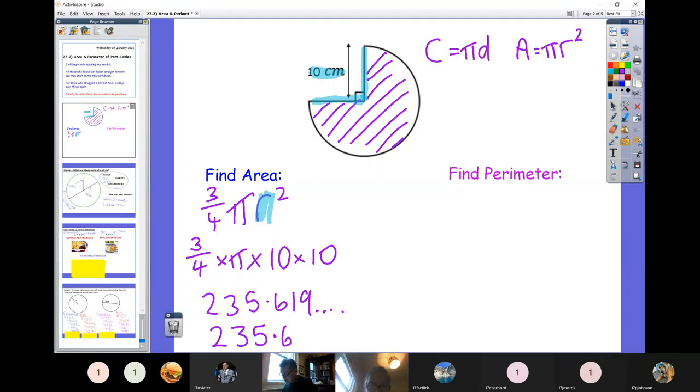Now the perimeter is a bit more complicated. The perimeter is the length all the way around the outside. Imagine you're starting off running around from the top, so imagine yourself running around from up there. As you run around the side, you do that orange bit.